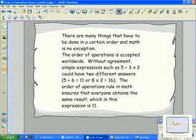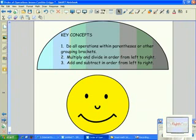Without agreement, simple expressions such as 5 plus 3 times 2 could have two different answers: 5 plus 6 equals 11, or 8 times 2 equals 16. The order of operations rule in math ensures that everyone obtains the same result, which in this expression is 11.